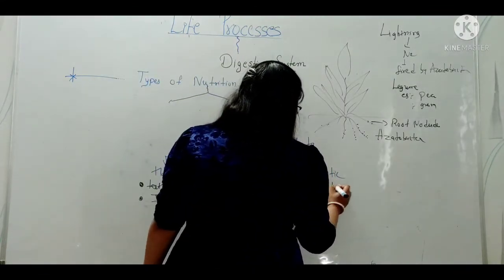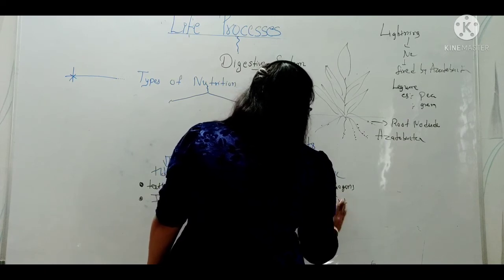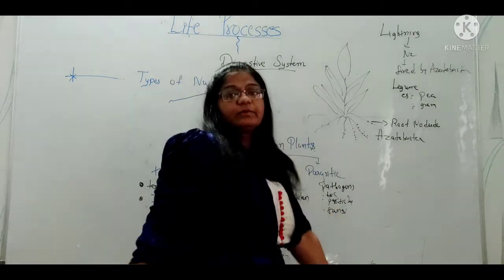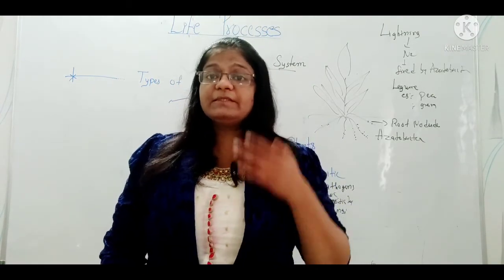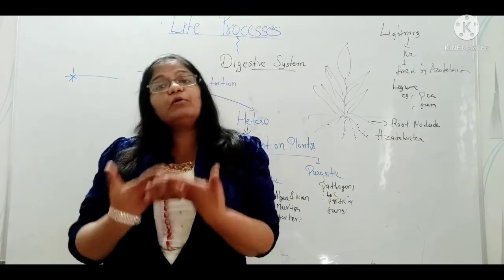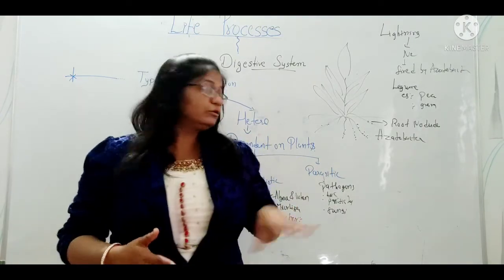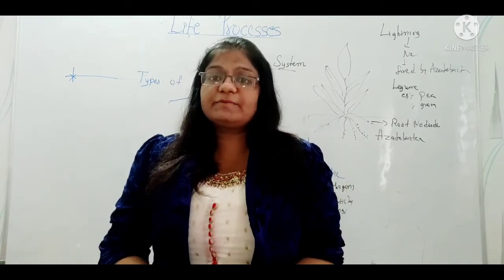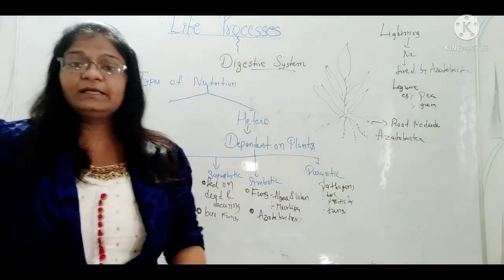Parasitic are all the pathogens — including bacteria, protista, and fungi — those responsible for so many diseases. They enter our body and take nutrition from us as the host. This is not a symbiotic relationship because these organisms get the benefit of nutrition from us but give us no benefit — only harm by creating disease. So this is the mode of nutrition. This question could be asked as 'explain types of nutrition or mode of nutrition' for two marks.